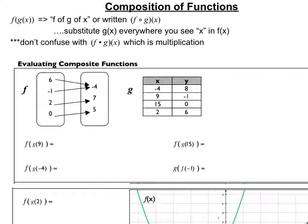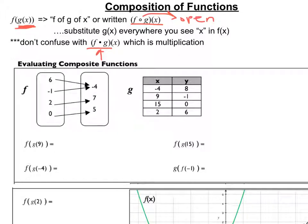Now we're going to do something called a composition of functions. A composition is read or written as f of g of x — literally one function, in this case g of x, is plugged into the other function f. The notation can be easily confused with multiplication: multiplication has a filled-in circle and composition has an open circle — kind of like 'fog.' We're going to look at this from a few different perspectives, starting with tables and mapping diagrams.